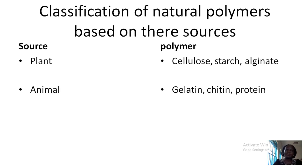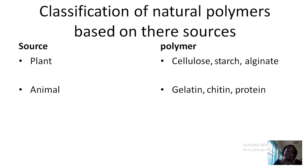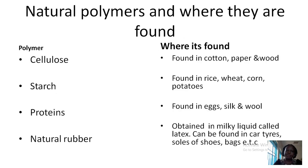Natural polymers can be classified according to their sources, where we get them from. Basically we have two major sources: the plants and then the animals. Examples of the polymers that we extract from plants include the cellulose, the starch and then the alginate. From the animals, the polymers include gelatin, chitin and then protein.